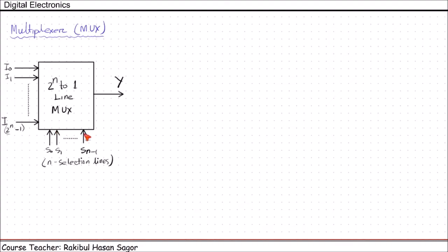This is the basic block diagram of a typical MUX. We have selection inputs. If we have n selection lines, then there can be 2 to the power n number of input lines, and there will be one single output line.